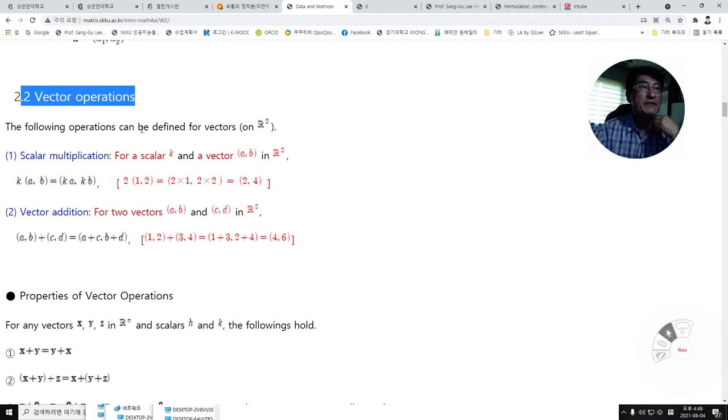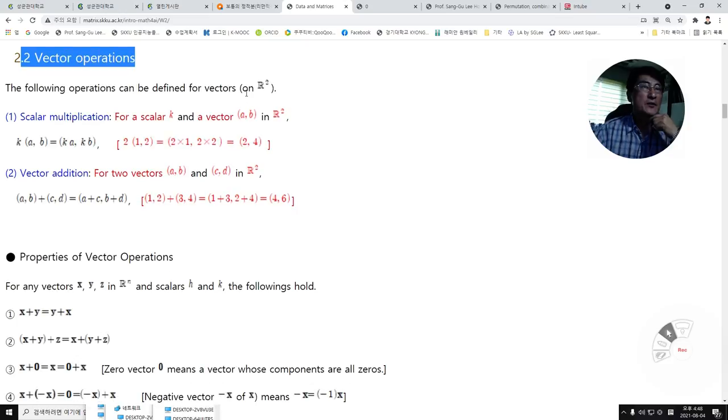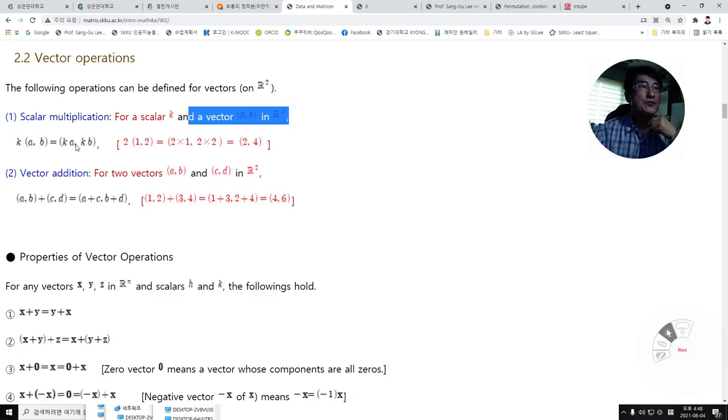The following operations can be defined for vectors in R². First, scalar multiplication. For a scalar k and a vector A in R², it can be defined this way. For example, 2 times the vector (1, 2) can be written as (2, 4).